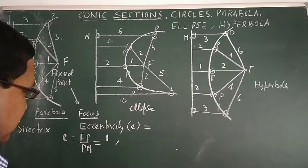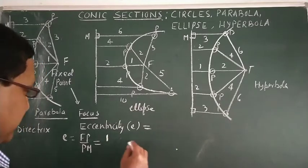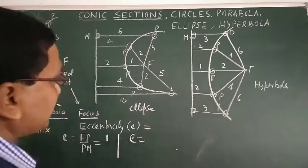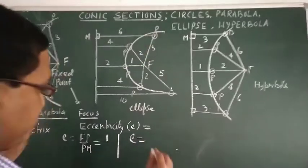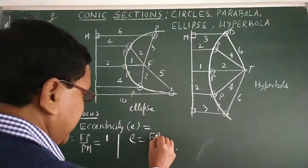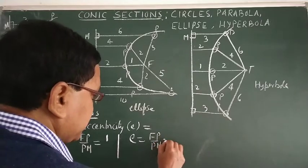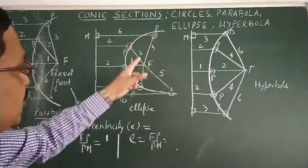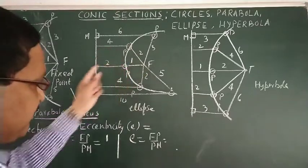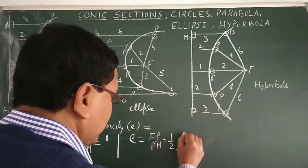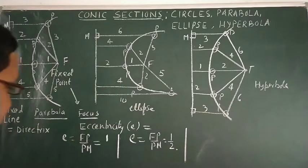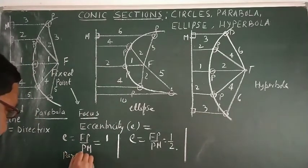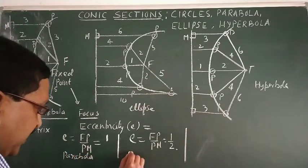So eccentricity for parabola is one. For ellipse, e equals FP by PM: three by six is one by two; two by four is also one by two; so e equals one by two. This is for parabola and this is for ellipse.